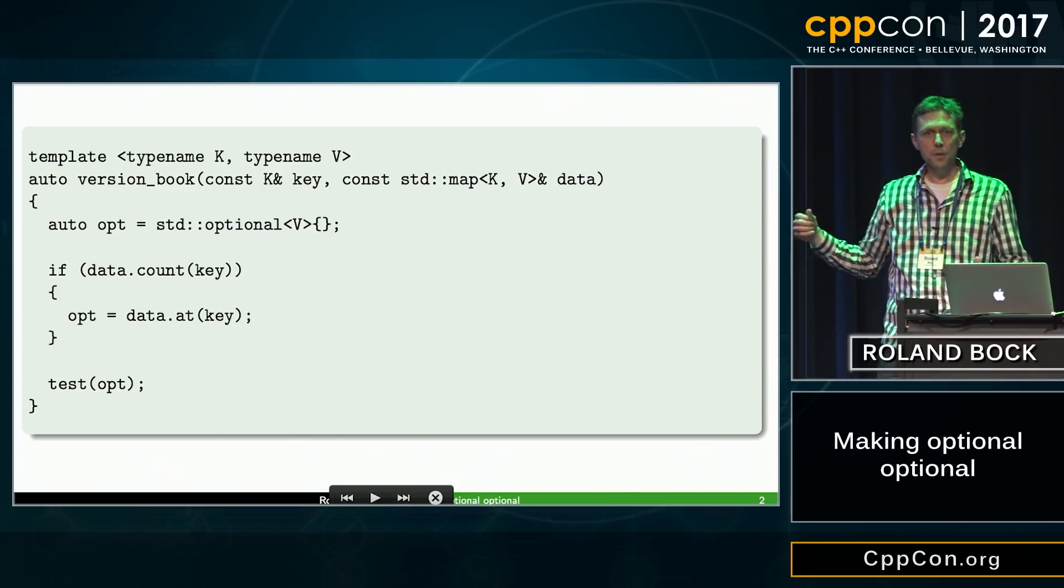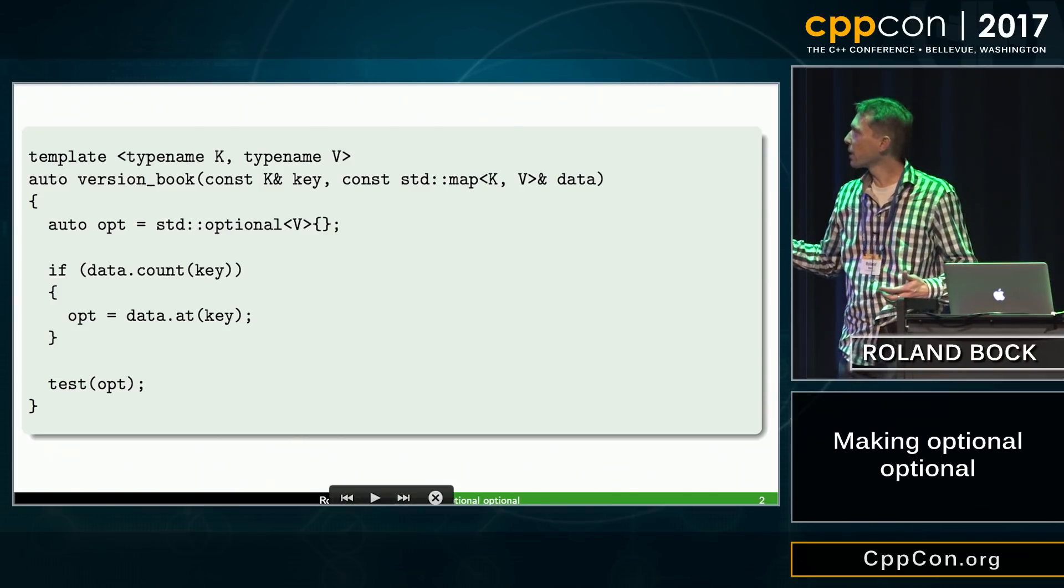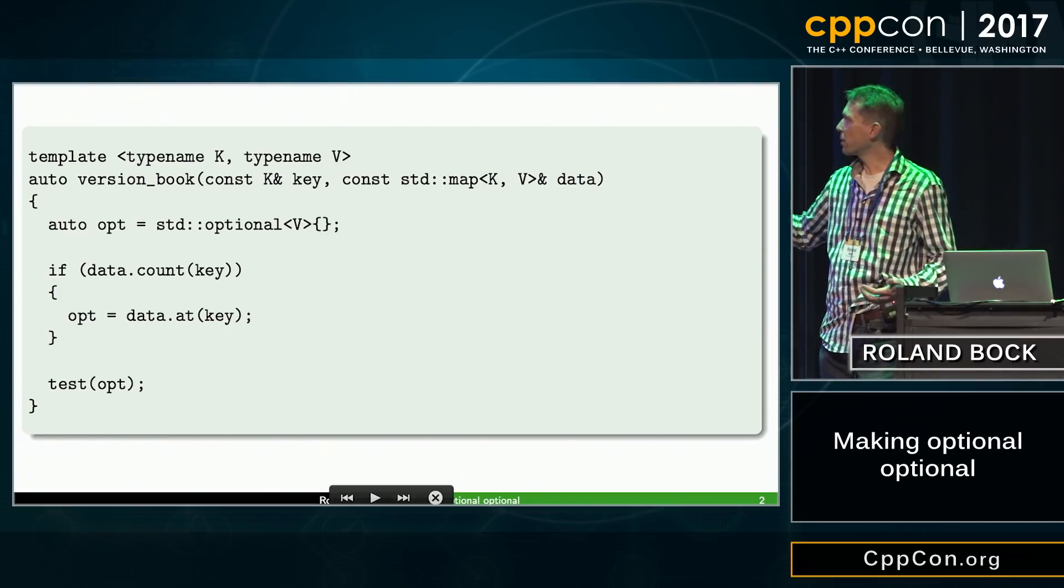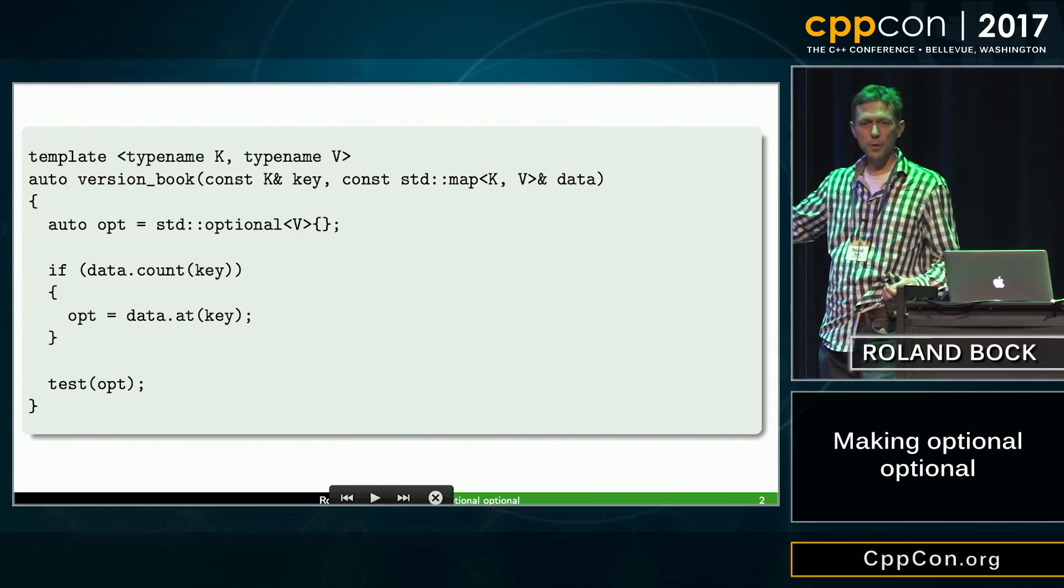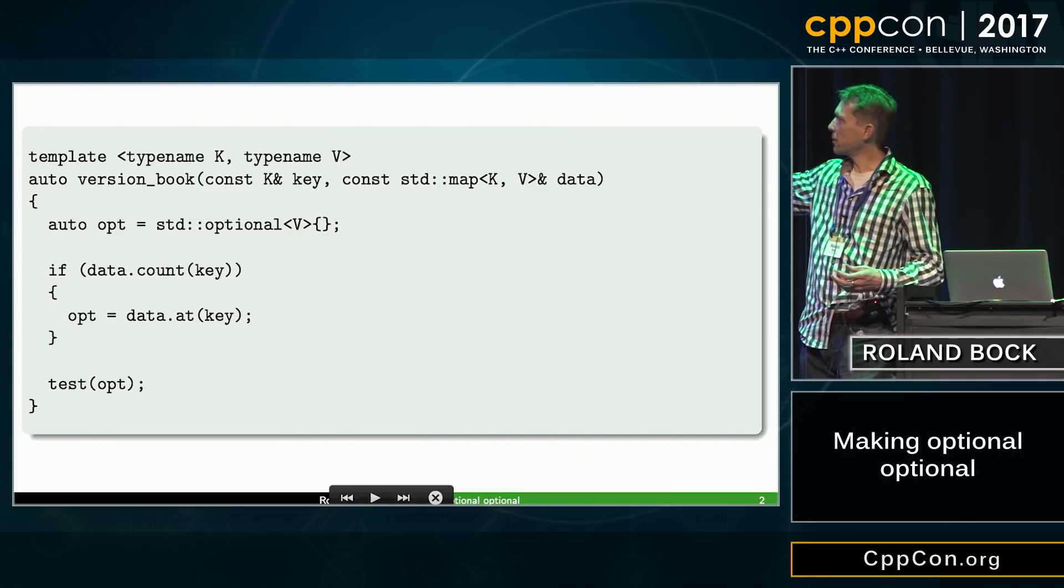So how does the user provide that optional to me? Well, the user could do it in the same way as documented always, so default construct the optional, then take a value from the map,